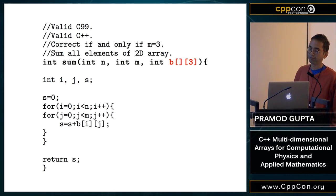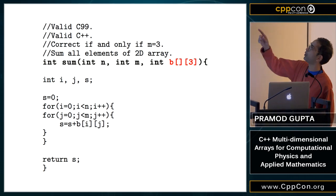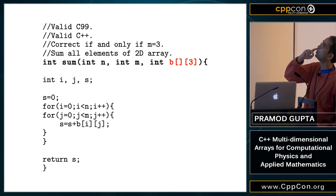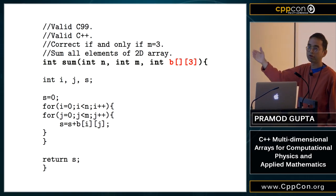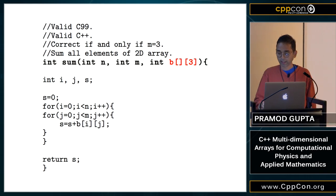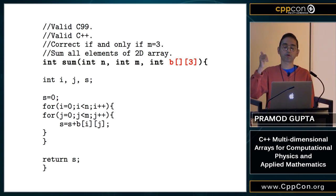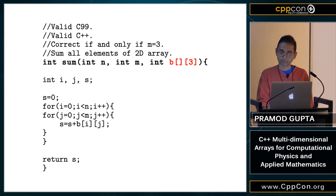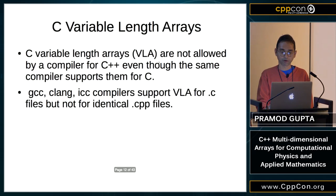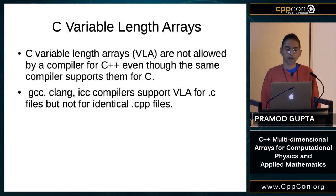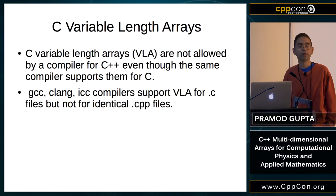This is valid in both C99 and C++: you can leave the first dimension of the array unknown at compile time, but the second and all later dimensions have to be known at compile time. That's problematic if you're constrained all the time. The code is correct only if m equals 3, so you need a different code each time you have a different m.